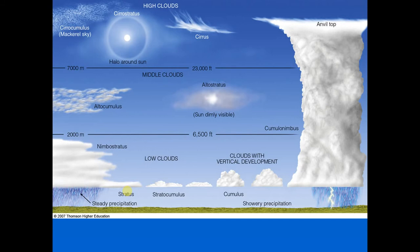Nimbostratus and stratus are easily confused, but stratus has a more uniform base than nimbostratus. Stratus may be confused with altostratus, but stratus is lower and darker gray. An important clue: stratus will often completely cover the sun — you will not be able to see it at all — whereas with altostratus you'll be able to see a watery sun behind the clouds.